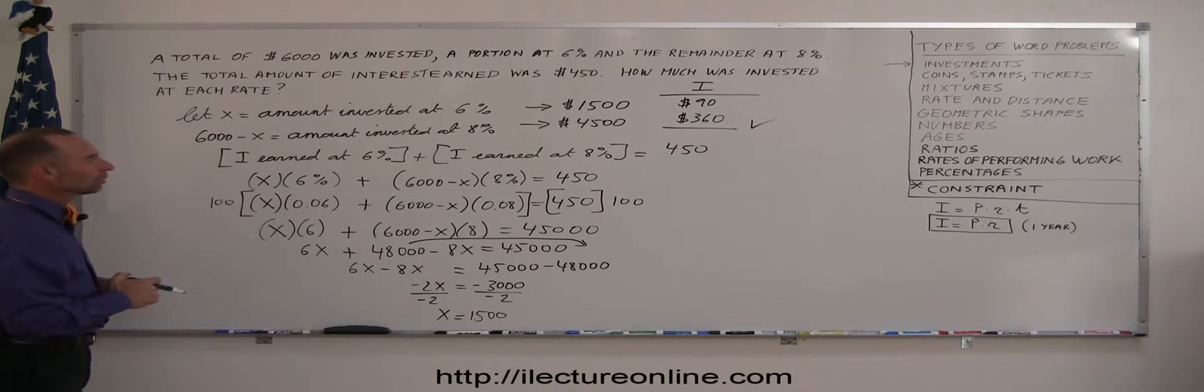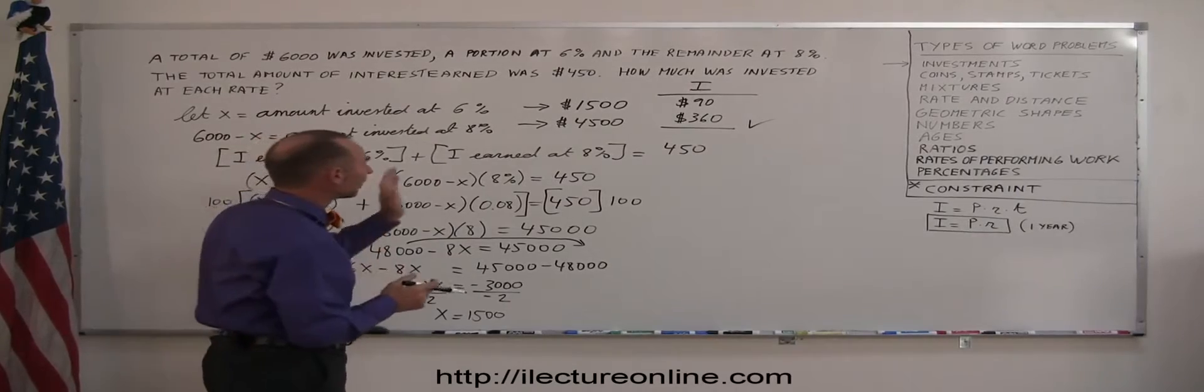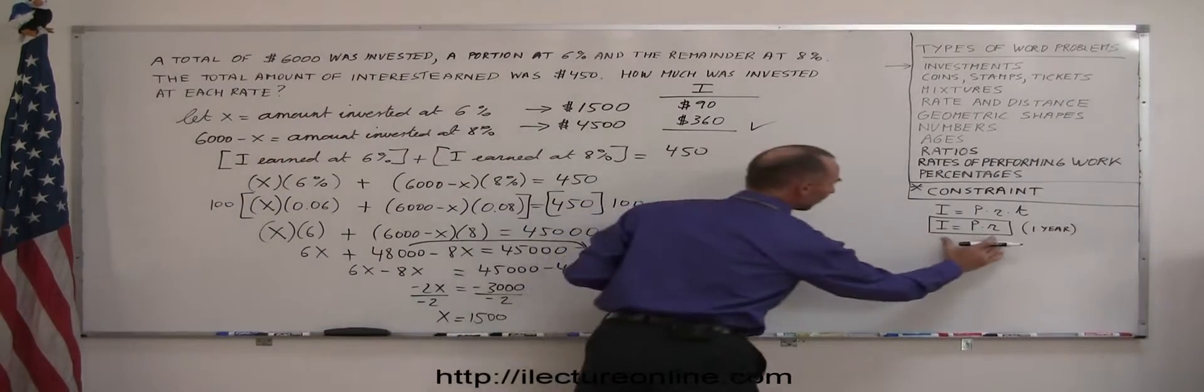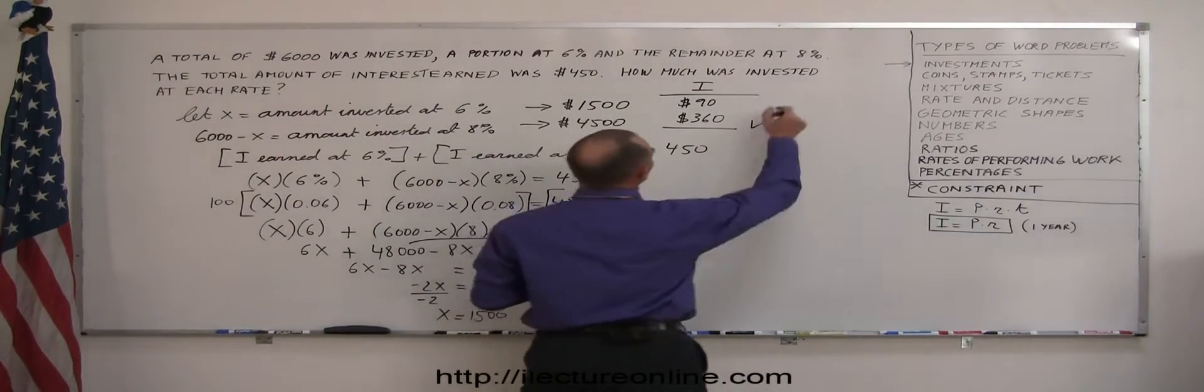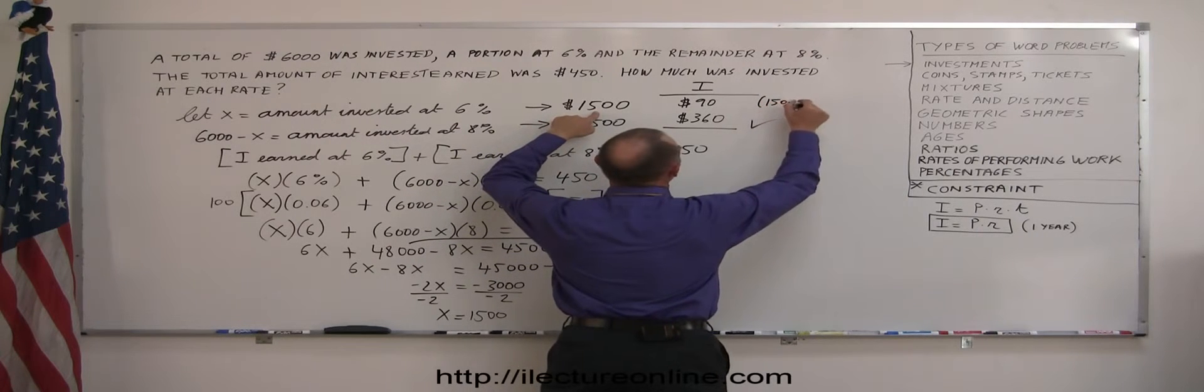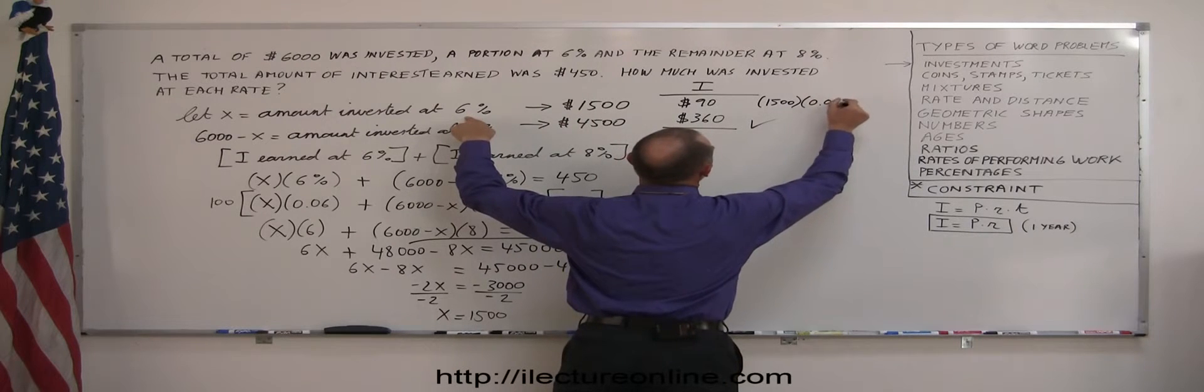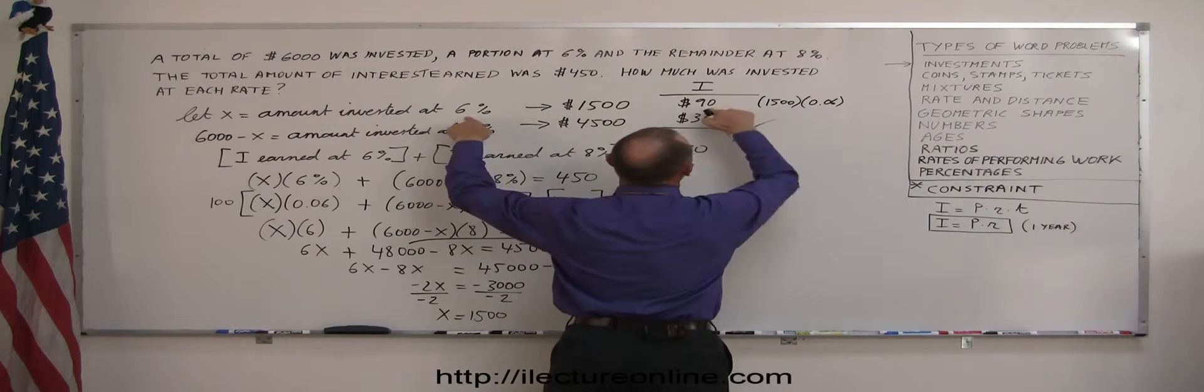All right, you always want to make sure that you do this correctly. Now, if you say, well, what did he do over here? I didn't quite get that. Well, what I quickly did is I applied this equation right here. I took the principal, so I said $1,500 times the 6%, which is 0.06. When I multiply these two together, I get 90. And over here,